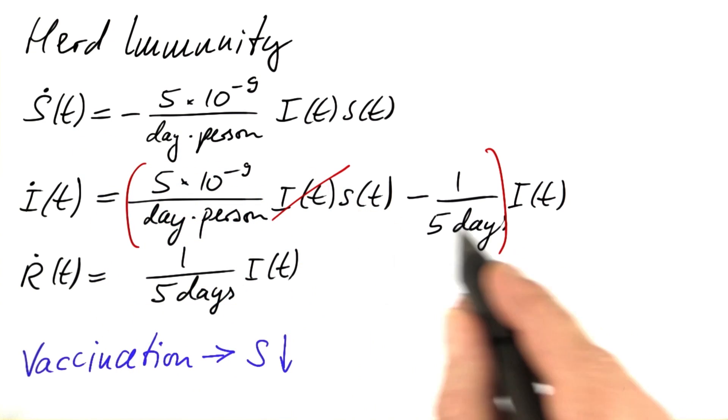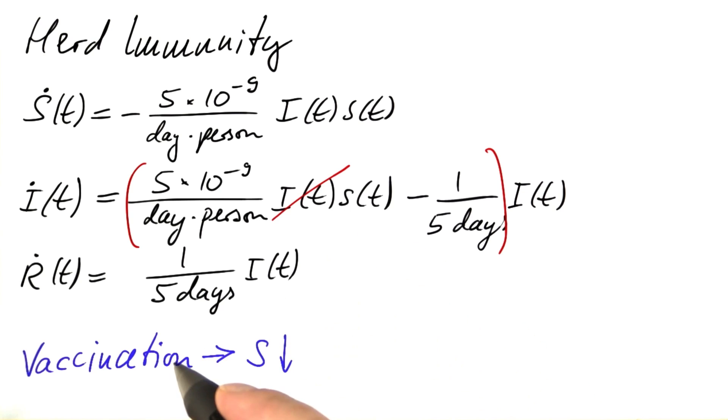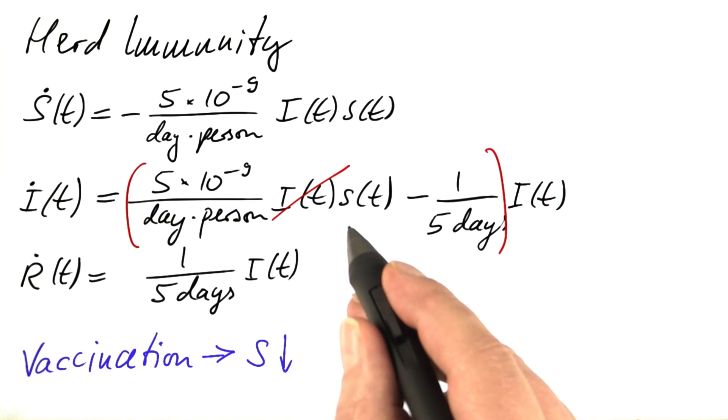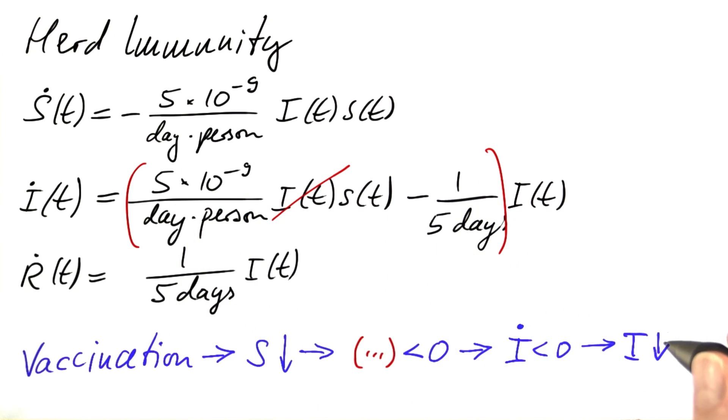When the number of susceptible persons shrinks, the first term in the red parenthesis decreases. Eventually, if you vaccinate enough people, the complete expression becomes negative.